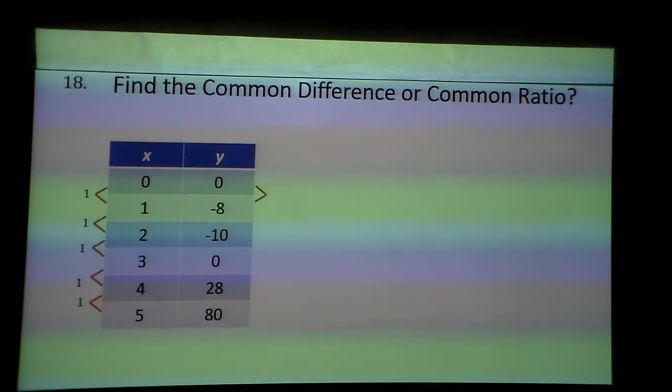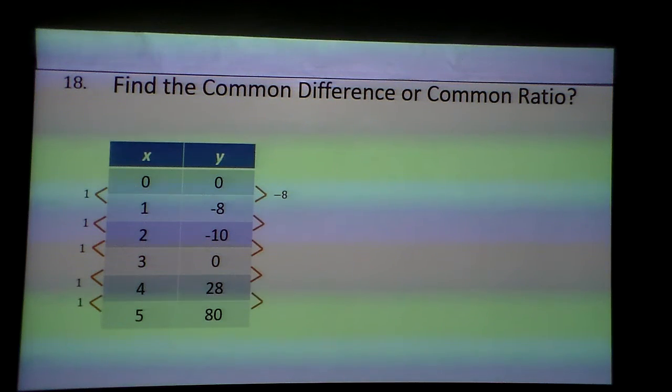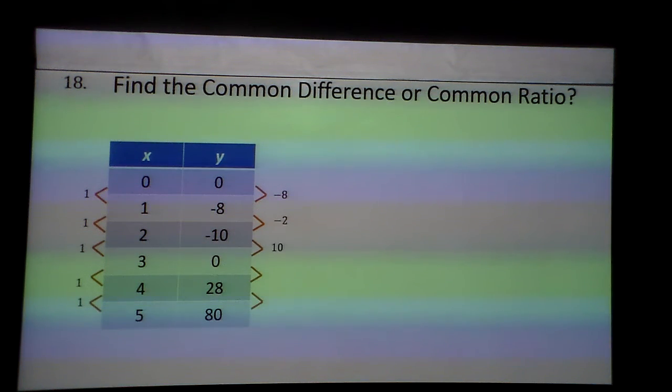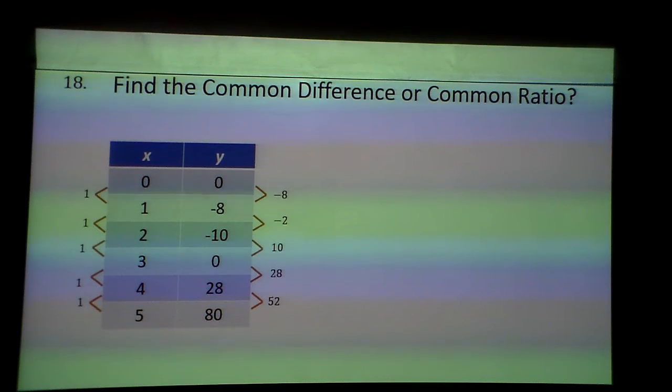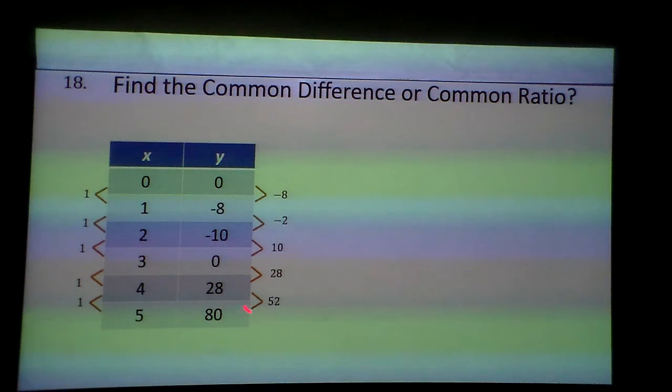But what's this one doing? It went down 8, then it went down 2, and then it went up 10, up 28, up 80. Those are big numbers. I mean up 52 to make 80.